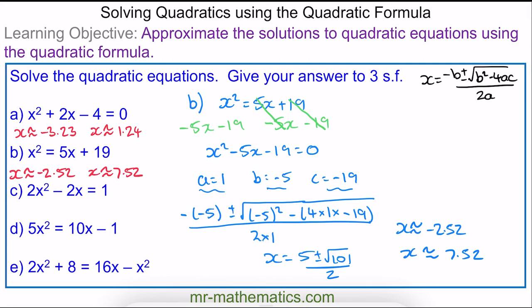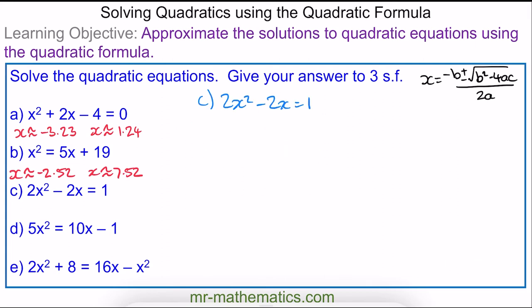For question c, we make the equation equal to 0 by taking away 1 from both sides. So we have 2x² − 2x − 1 = 0. Therefore a = 2, b = −2, and c = −1.